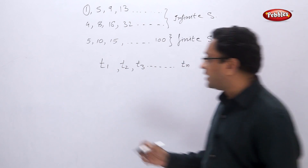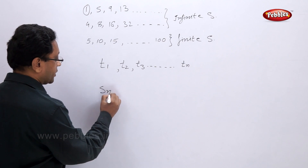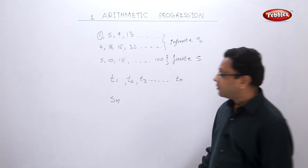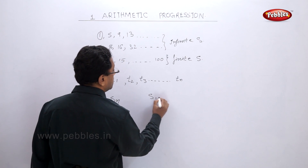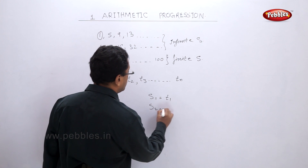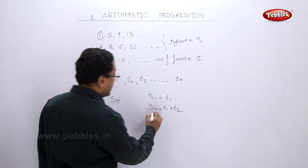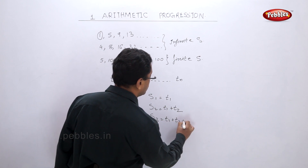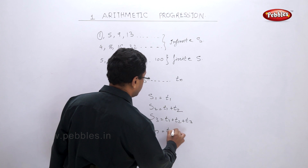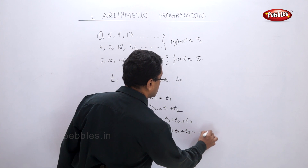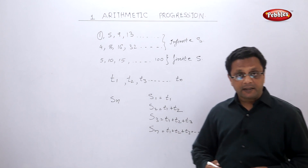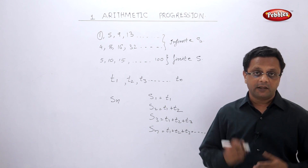Now one more term comes into sequence — that is S. S is nothing but the sum. If I say S1, that means S1 equals T1. S2 equals T1 plus T2. S3 equals T1 plus T2 plus T3. And hence Sn equals T1 plus T2 plus T3 and so on till Tn. So Sn is nothing but the sum of all the terms in that particular sequence.